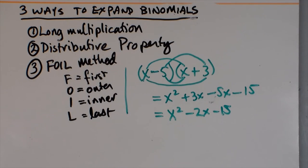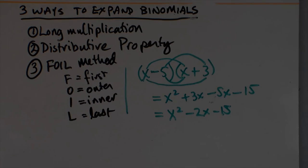In review, there are three ways to expand binomials: one is by long multiplication, two is by the distributive property, and three is by the FOIL method.